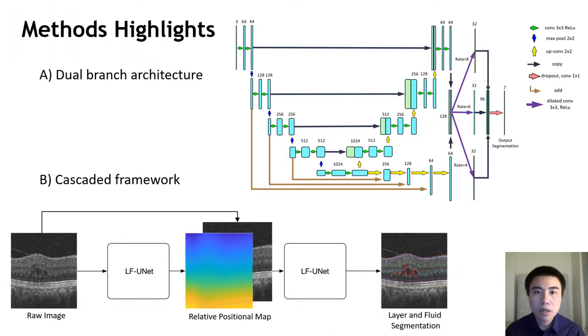We'd like to highlight two main contributions of our methods. Firstly, we present a dual-branch architecture which combines the implementation of both the U-Net and FCN.